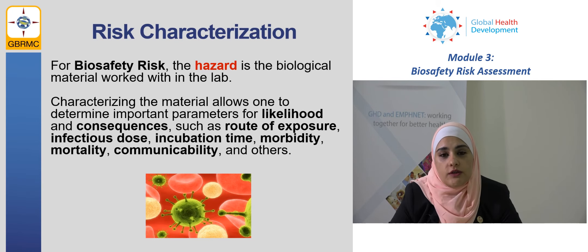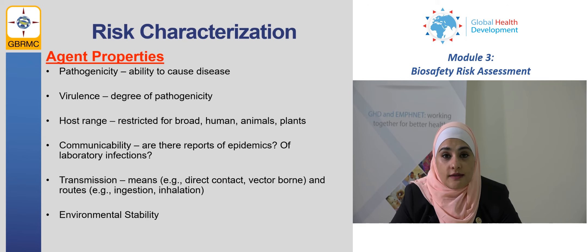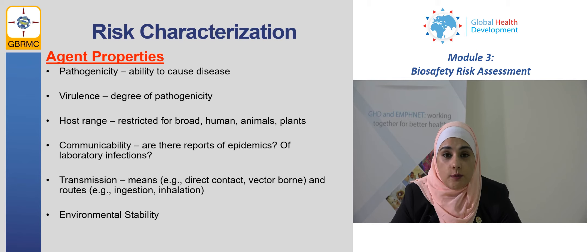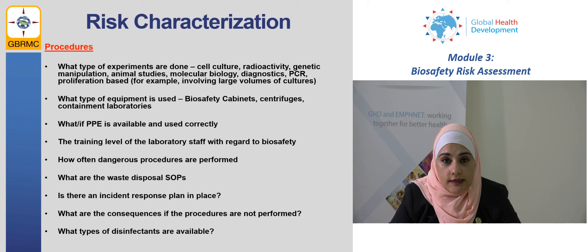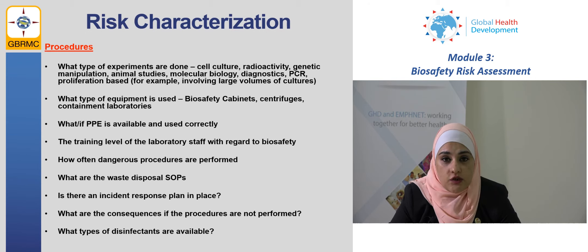For agent factors, we need to consider the hazard — in biosafety risk assessment, this is the biological materials or toxins being handled. We need to collect information about the incubation period, infectious dose, route of exposure and infection, pathogenicity (the ability of the agent to cause disease), virulence (the degree of pathogenicity), host range (human, animal, or plant), communicability (whether it is epidemic or not), transmission routes (inhalation, ingestion, or direct contact), environmental stability, and any other important factors about the infectious agent.